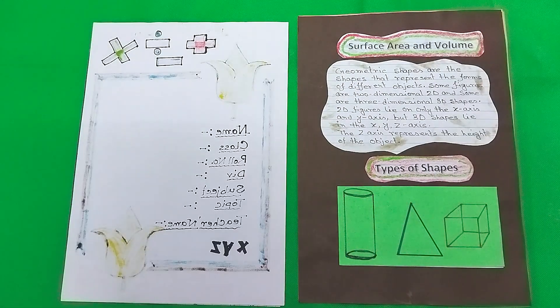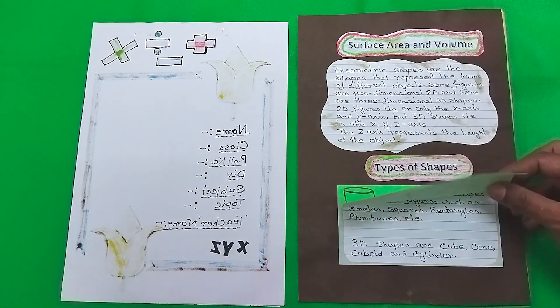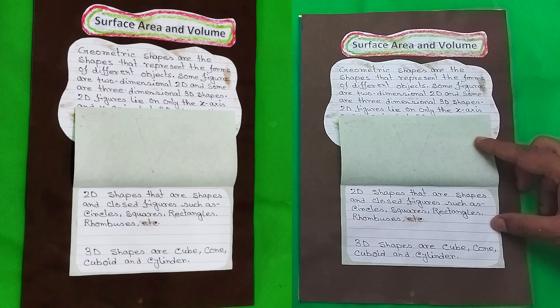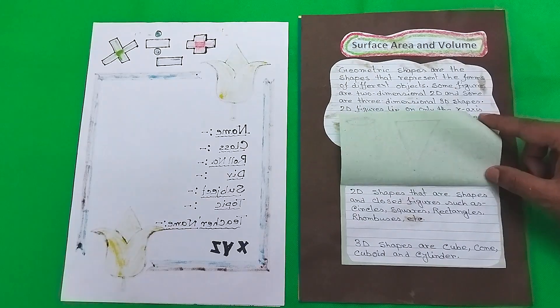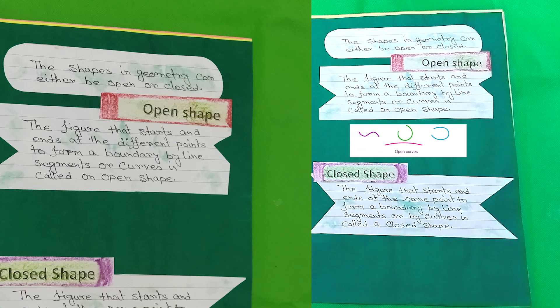This is a sample project file from which you will get an idea of how to make 3D shapes math project file. CBSE project file math for class 10, topic: types of 2D and 3D shapes.